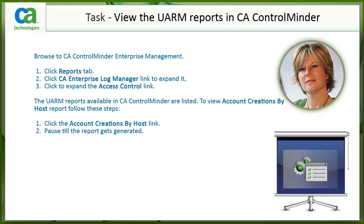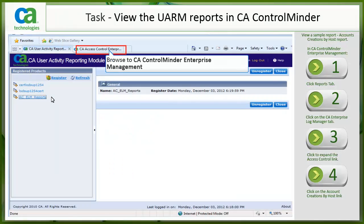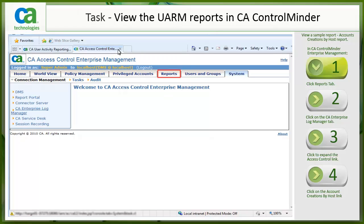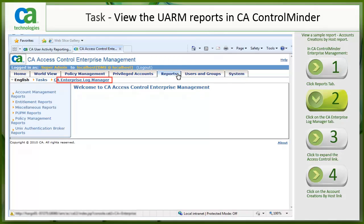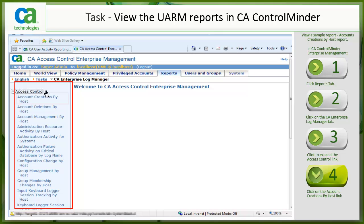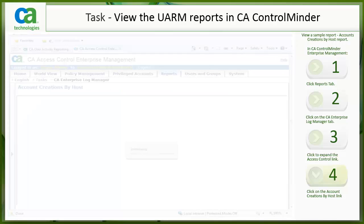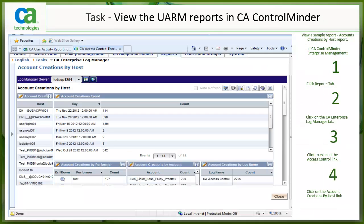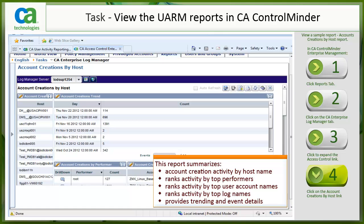To view the CA UARM reports in CA Control Minder, follow these steps. I will demo these steps in the next few slides. You may choose to pause the slide by clicking the pause button below to read through the steps. Browse to CA Control Minder Enterprise Management. Click on the Reports tab. Click on the CA Enterprise Log Manager tab. Click to expand the access control link. This page shows all the reports generated by UARM. We will view the account creations by host report. Click the link and wait until the initializing process completes. Observe that the account creations by host report is loaded from UARM — the report provides new accounts that are created, summarized by host.